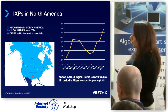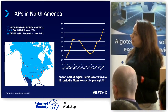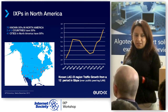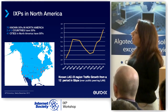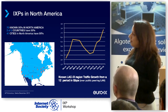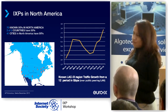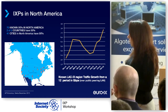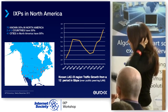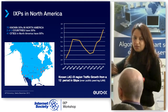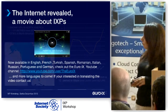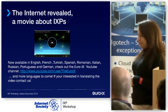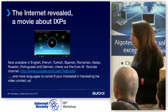In North America, there are 17 known IXPs — that's two countries (the US and Canada) — and 41 cities in North America have IXPs. The traffic graph again shows a dip in the summer and then a big incline afterwards, but the general trend is clearly growing over the years.